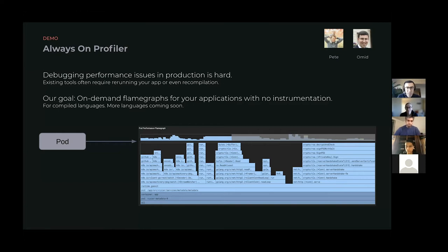The profiler works for compiled languages — Go, C++, Rust. We haven't tested other compiled languages but it probably works for those as well. Support for more languages, including interpreted languages and Java, will be coming later.